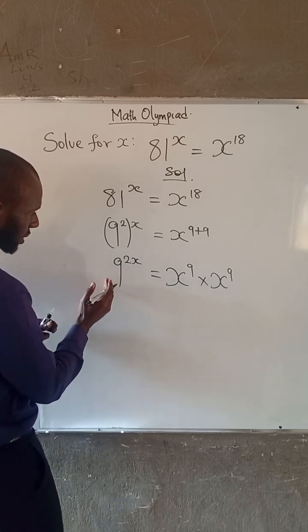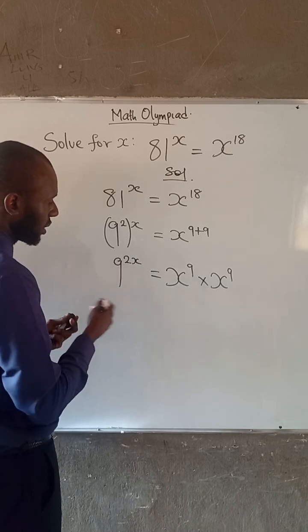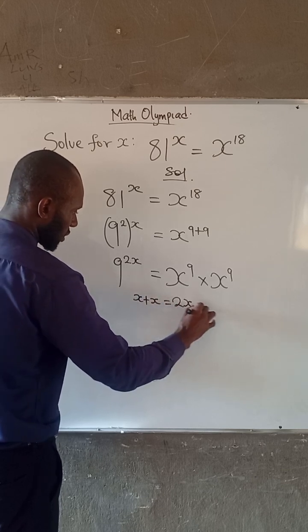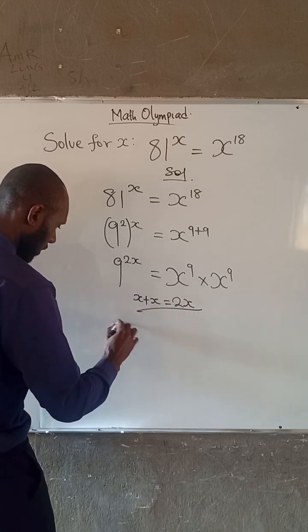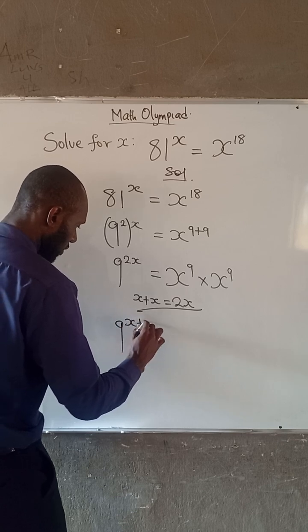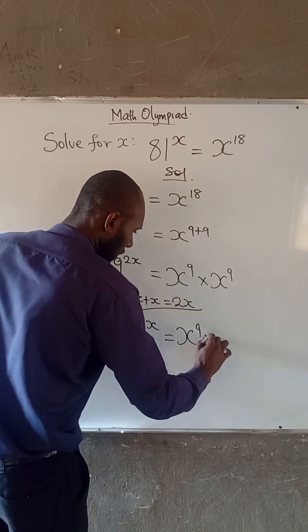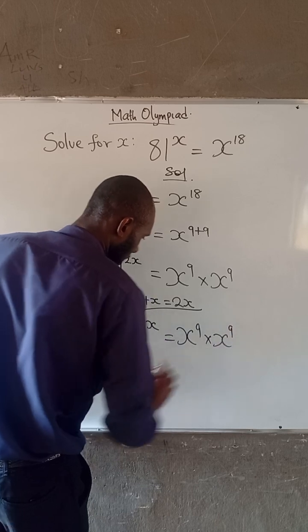So at the left-hand side we have 2x here. Recall that x + x equals 2x. Therefore, 9^(x+x) equals x^9 times x^9.